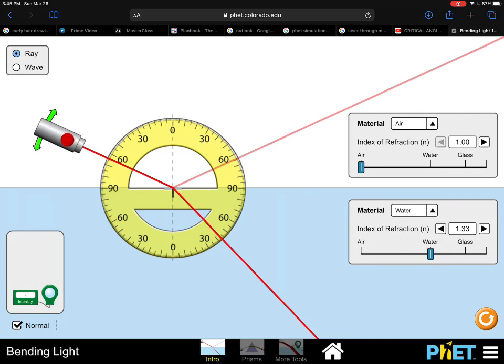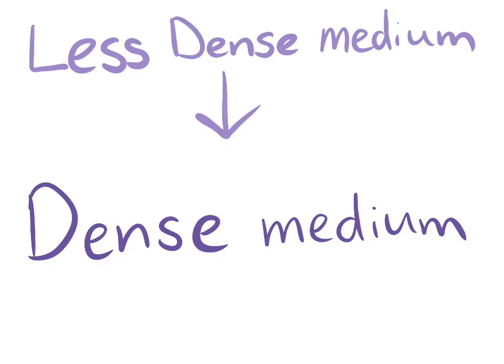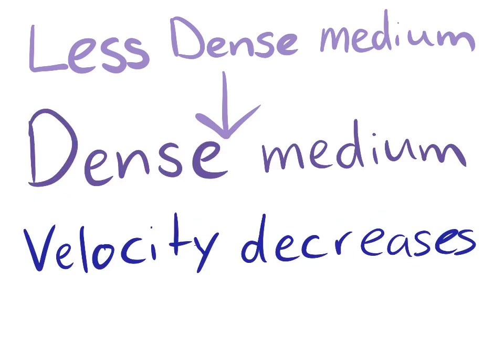It is because water is denser than air. If light goes from a less dense medium into a denser medium, the velocity decreases and it bends towards the normal line.